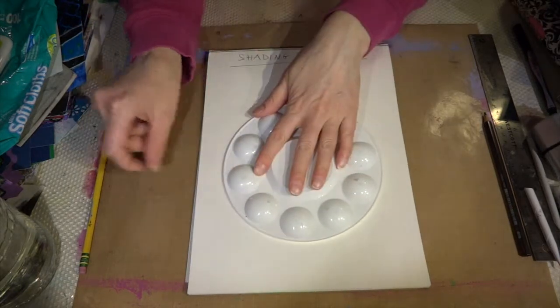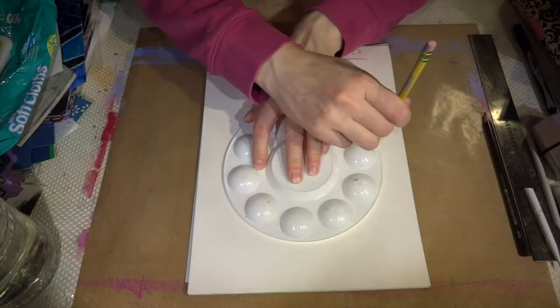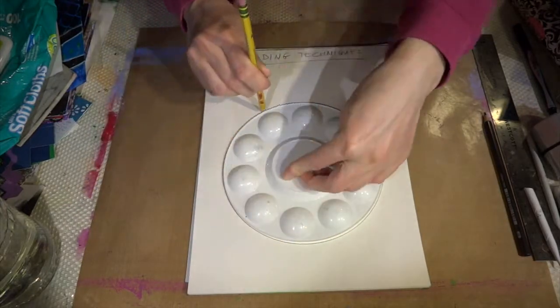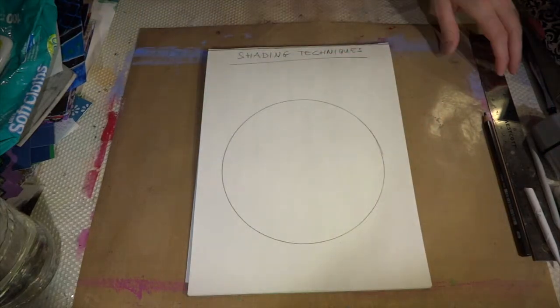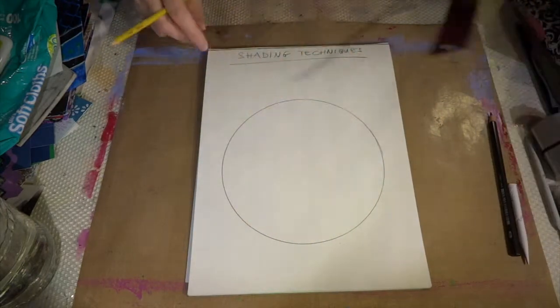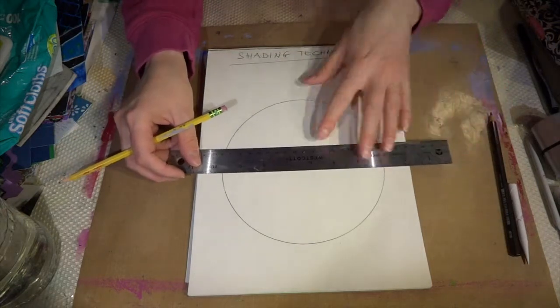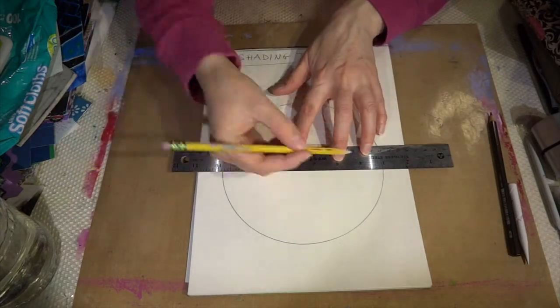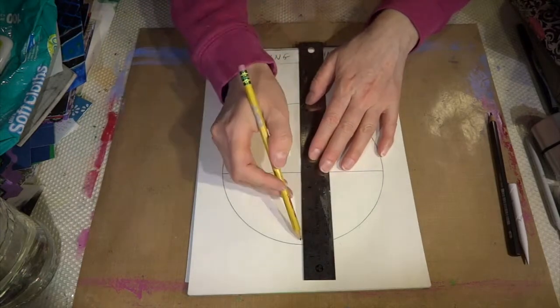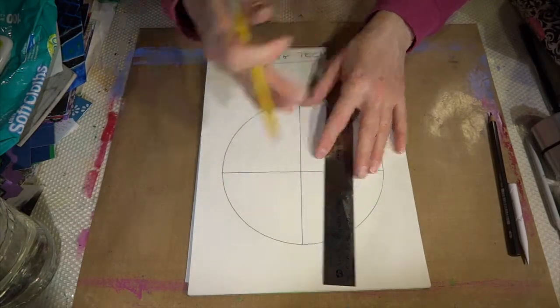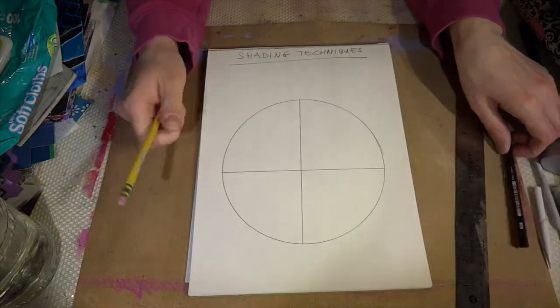The four major shading techniques that we are working with are going to be blending, hatching, cross hatching and stippling. I'm going to ask you as you've seen to draw a circle in your sketchbook and grab a ruler, divide it into at least four sections and you can divide it into more based on my demonstration if you wanted to.